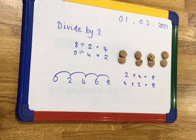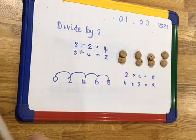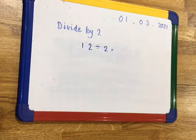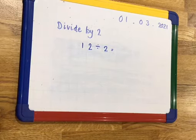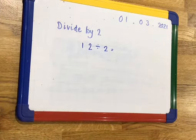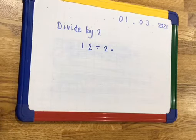I could have used my knowledge of times tables to help me solve this without having to draw a number line. Now children, I want you to see if you can solve 12 divided by 2 by jumping along on a number line. And when you've done that, I want to see if you can create a fact family and a bar model. Pause the video here and have a go.